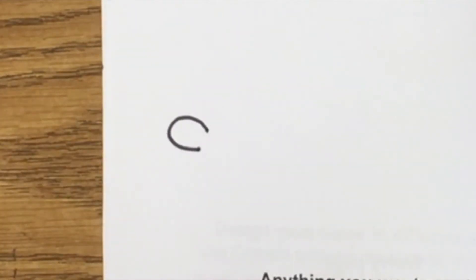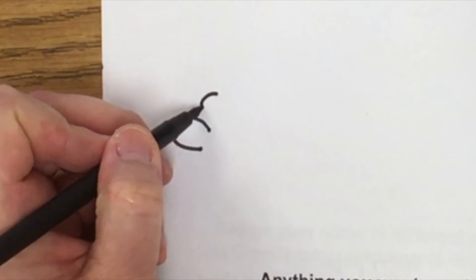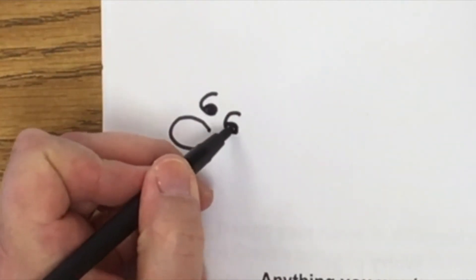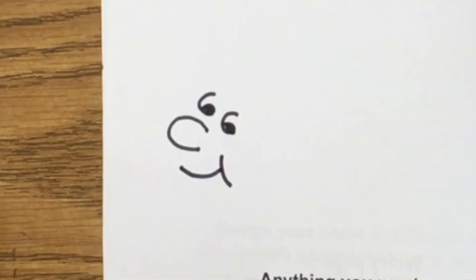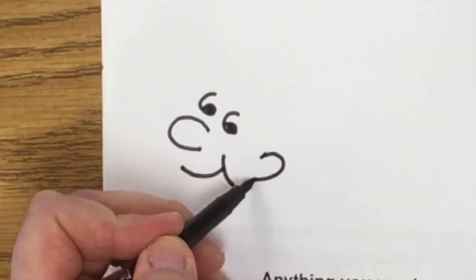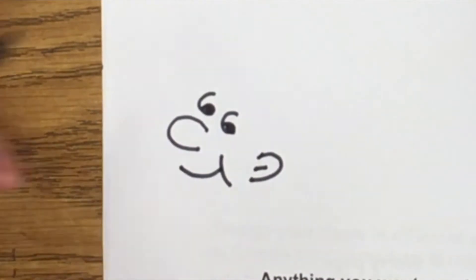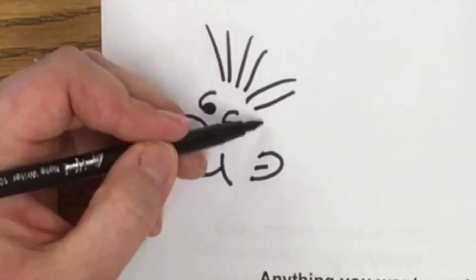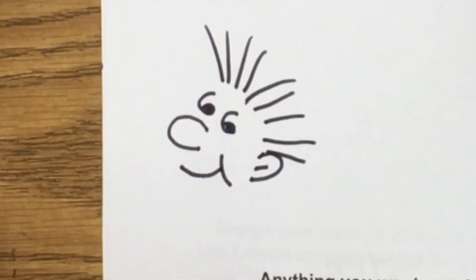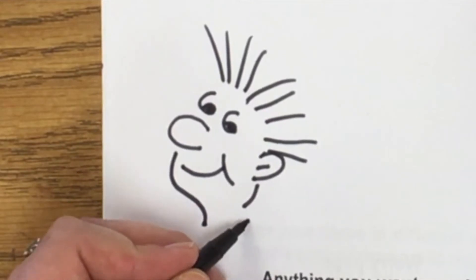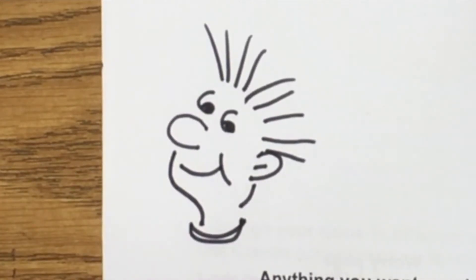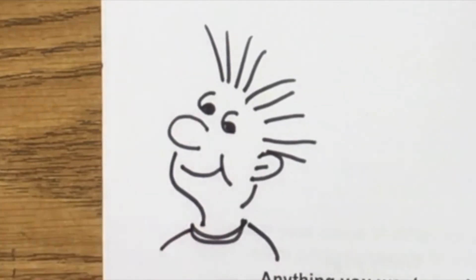To draw Harry, first I'm going to draw a letter C for the nose. Then I'm going to draw a six and fill in the hole, then another six and fill in the hole for his eyes. Then a little curvy line up, a little line for his ear, and some hair — just lines going out. Then a line down under his ear, a line under his nose, a little collar like a U shape, and two lines off the side for his shoulders. There's one little character!